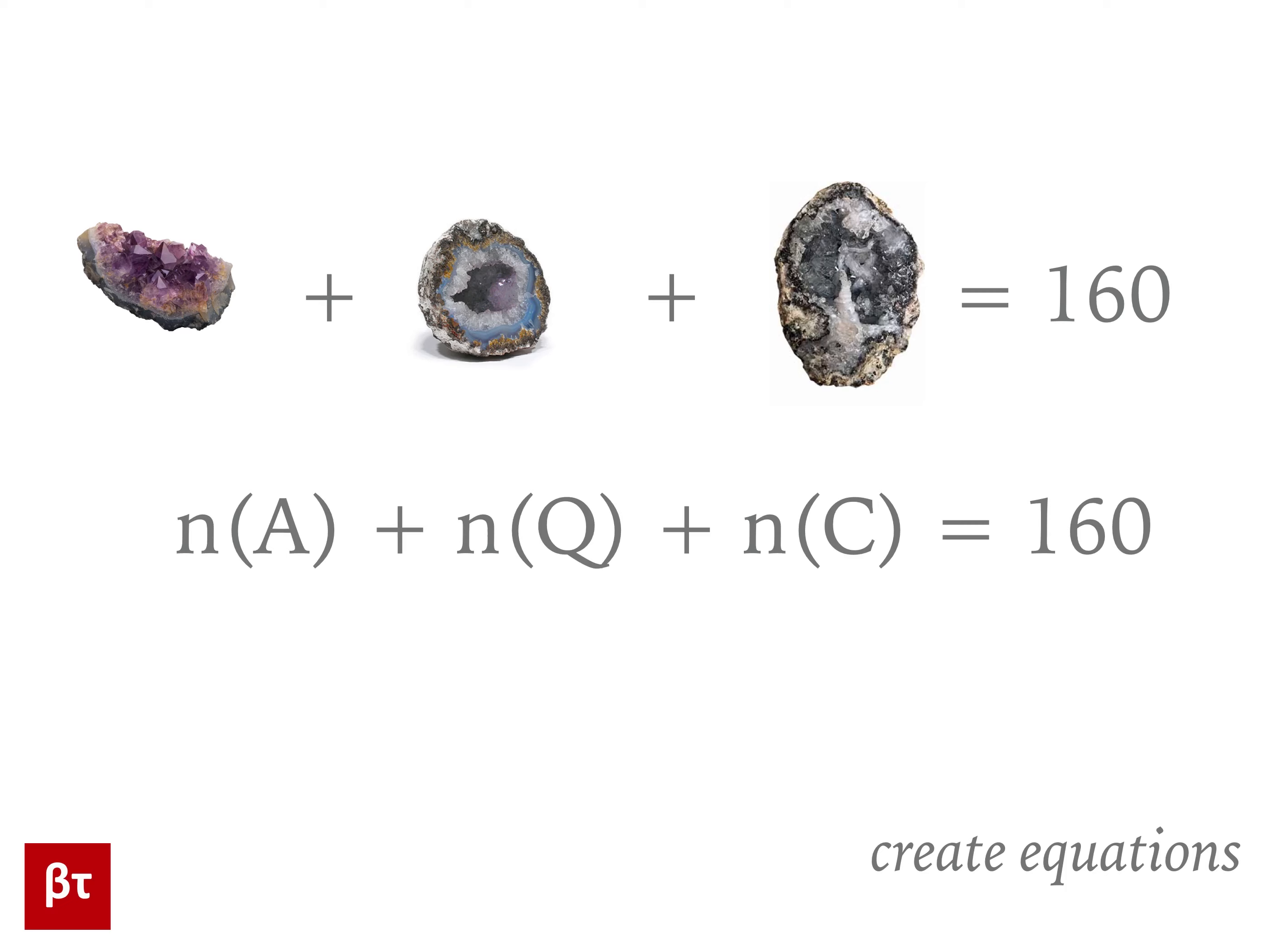Now that we have notation, let's write the information given in the problem as equations. As stated in the problem, adding up the number of geodes in each of these sets will equal the total, 160.